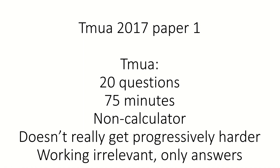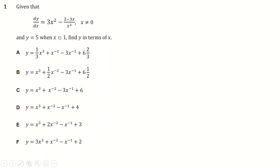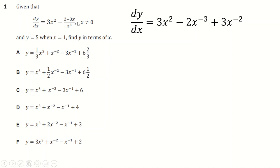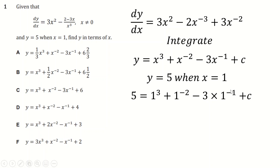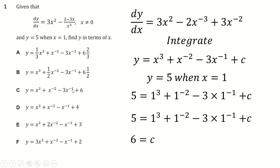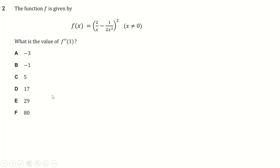This is the 2017 paper, question one. We find the function by integrating. Splitting into two fractions: 2x to the minus 3 and 3x over x minus 3, which gives a minus 2. Integrating to find y, raising the power and dividing. We know it goes through y = 5, x = 1. Substituting those in — ones to any power are just one — and we get c = 6, giving us this function.